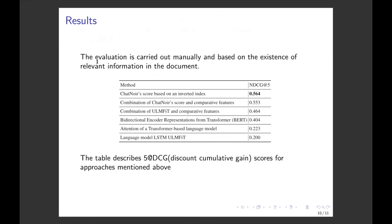The evaluation was carried out manually, and results for every approach are in the table. As you can see, the best score gives the ChatNoir system, the baseline. The second place is for approaches based on our R term, which is based on comparative feature term, and pre-trained models gave the worst score.